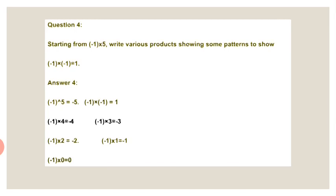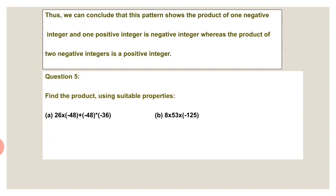Here I have written 3 numbers. By using this, you can write any number. We need to write the conclusion to the given question. Thus, we can conclude that this pattern shows the product of one negative integer and one positive integer is a negative integer, whereas the product of two negative integers is a positive integer.